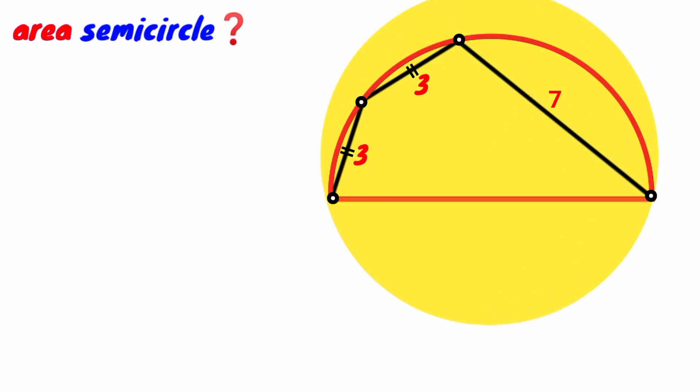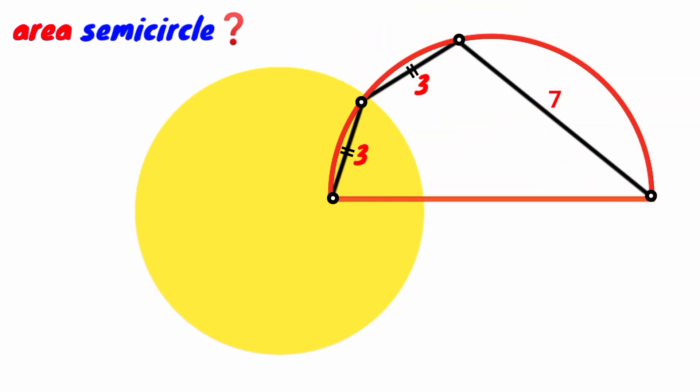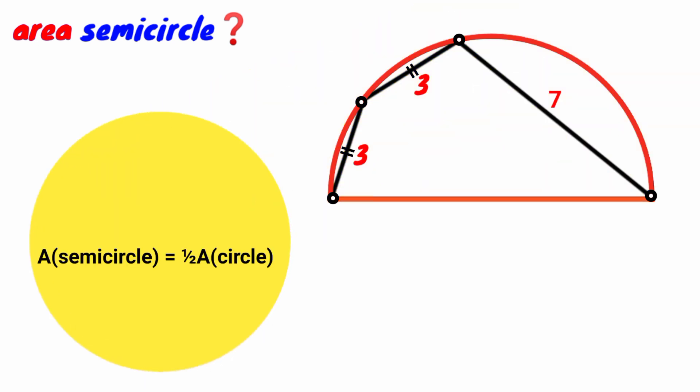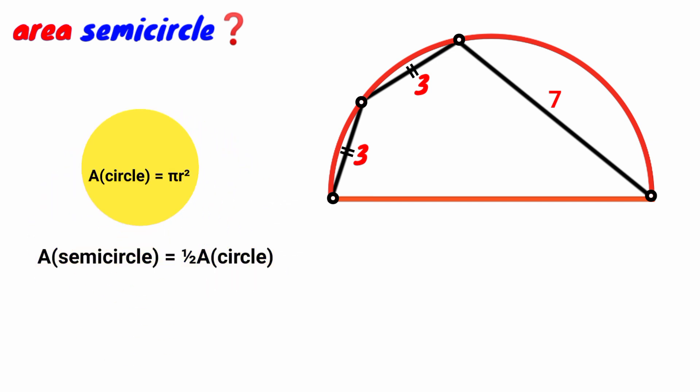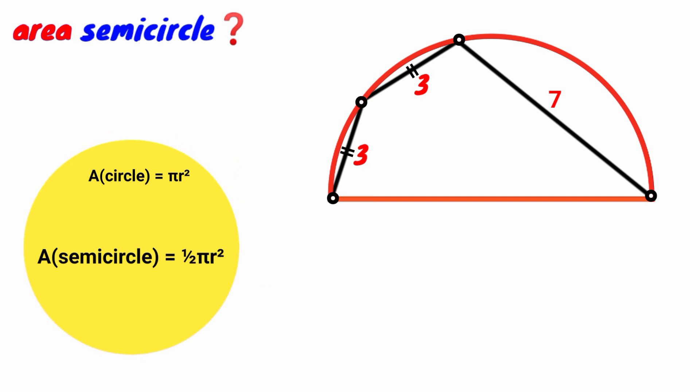It is very simple. We know a semicircle is half a circle, so we can say the area of a semicircle equals one-half the area of a circle. The formula for calculating the area of a circle is πr², so substituting, the area of the semicircle equals ½πr².